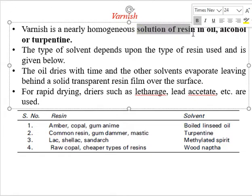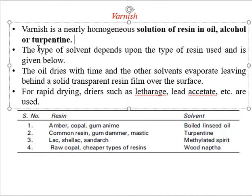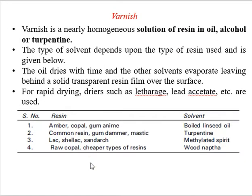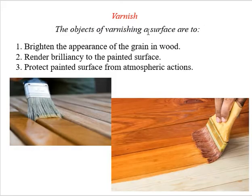Varnish is a homogeneous solution of resin in oil — that oil could be alcohol or turpentine. When resin and solvent are mixed together, varnish is obtained. Its main function is to make any surface or furniture surface shiny. When applied, the solvents dry off, leaving behind the resin. To dry rapidly, litharge or acetate can be used.